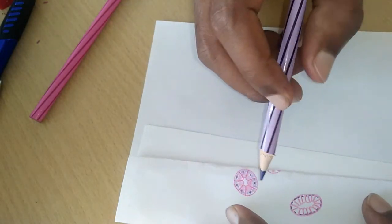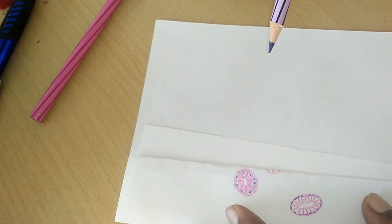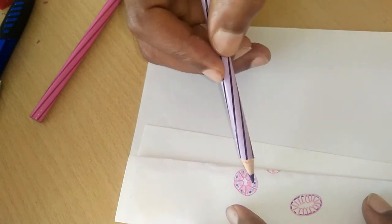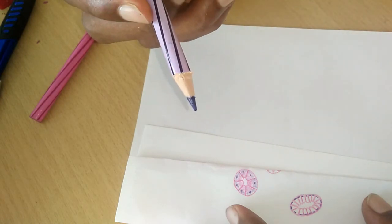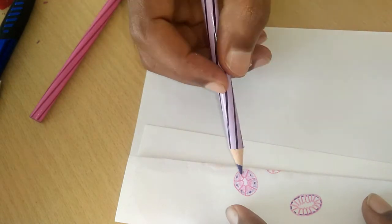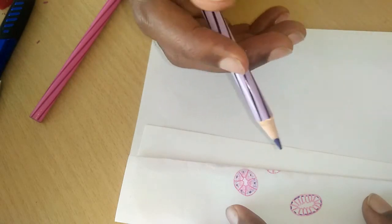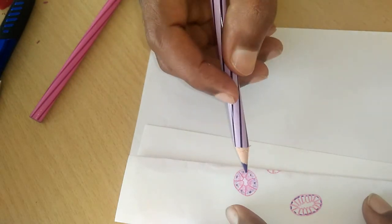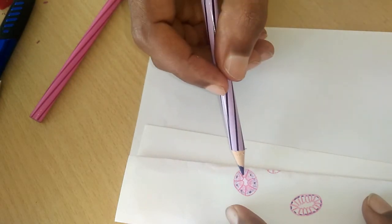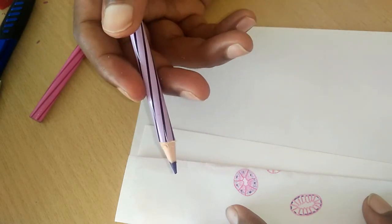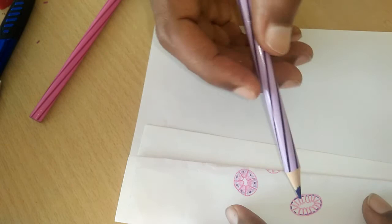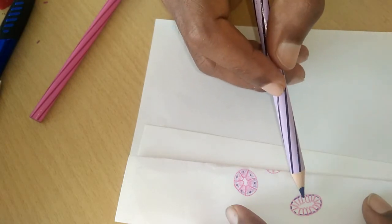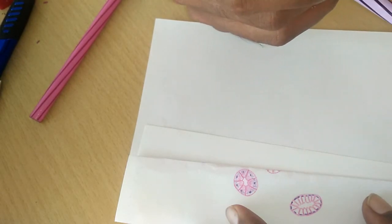So this is the difference between serous acinae and mucus acinae. This you can find in different glands. Like in parotid gland you will see more of serous acinae. Whereas in mucus glands, like sublingual glands, you will see a lot of mucus acinae.